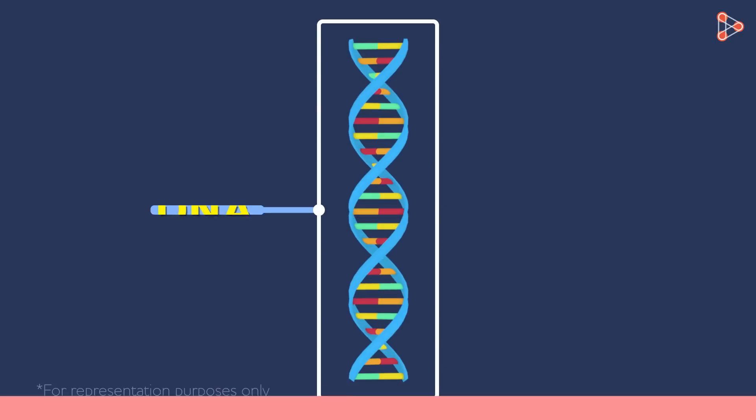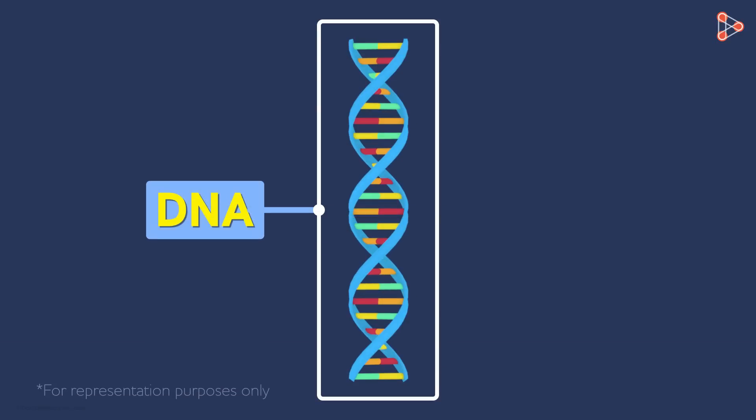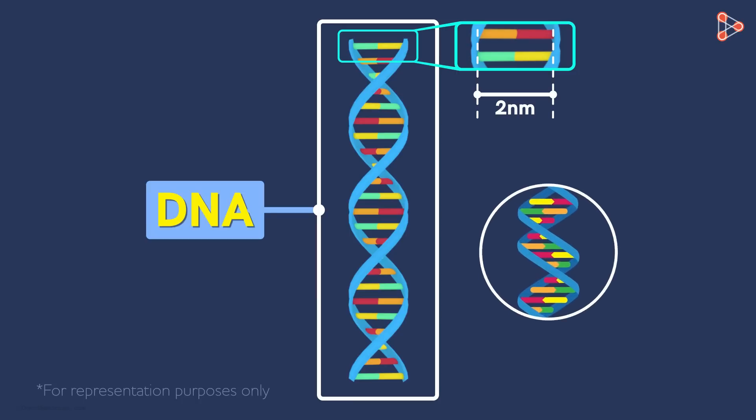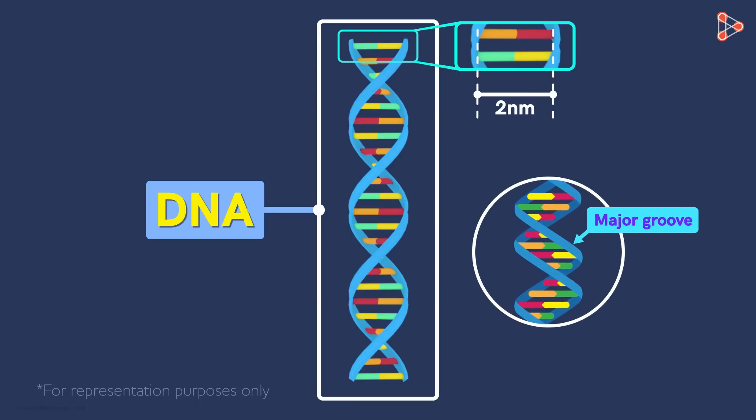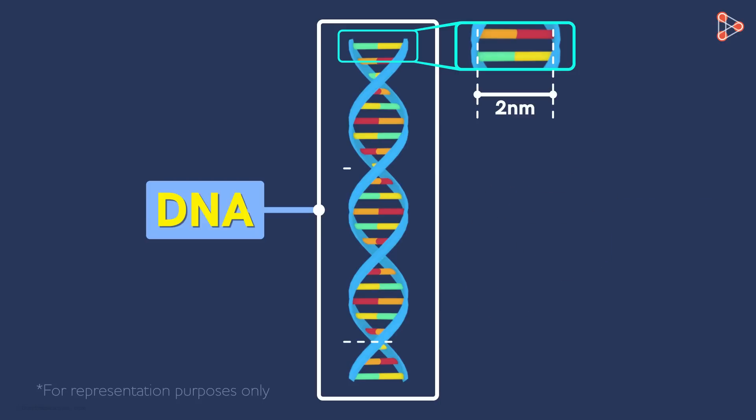The dimensions of DNA are very simple and easy to remember. The diameter of the double helix is around 2 nm. The double helical strand has one major and one minor groove that makes up one turn. The length of one turn is around 3.4 nm. And there are around 10 base pairs in one turn.